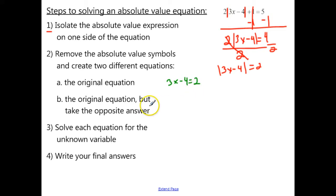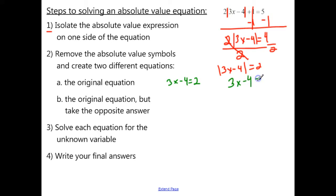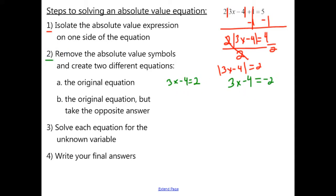The second equation we need to write is the original equation, but with the opposite answer. So we write 3x minus 4 the same, and then instead of a positive 2, we make this negative 2. Now we have our two different equations, and we've finished step number 2.